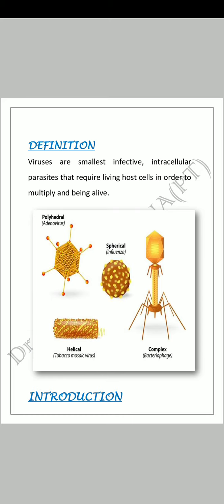Virus سب سے چھوٹے organisms ہوتے ہیں جو کہ infective ہوتے ہیں، مطلب کسی میں بھی infection cause کر سکتے ہیں۔ Intracellular parasite کا مطلب یہ ہے کہ virus اگر کسی بھی living being کی body میں نہیں ہے تو یہ inactive رہتے ہیں۔ جب یہ کسی بھی living being کے cell میں جاتے ہیں تو یہ اس کے اندر parasite بن جاتے ہیں، host cell کو destroy کر دیتے ہیں اور اپنے آپ کو reproduce کرتے ہیں۔ That is why we call them intracellular parasites - that require living host cell in order to multiply and be alive.